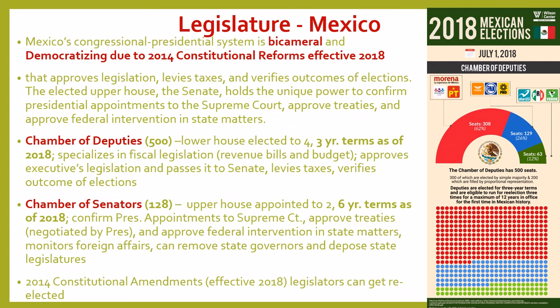Let's move to Mexico. Mexico is a presidential system and it is bicameral. The big thing to remember about Mexico's legislature is that it's democratizing due to the 2014 constitutional reforms that took effect in 2018. Both the Chamber of Deputies and the Chamber of Senators approve legislation, levy taxes, and verify election outcomes. The Senate holds additional power — it confirms presidential appointments to the Supreme Court, approves treaties, and approves federal intervention in state matters.